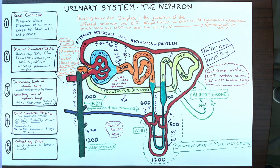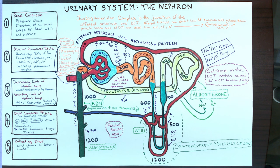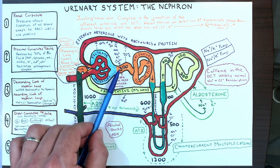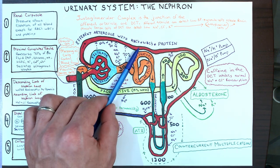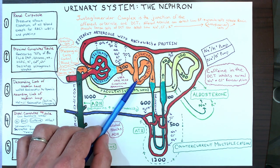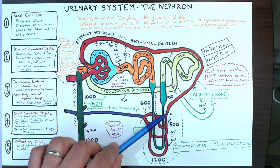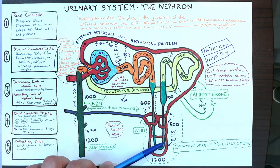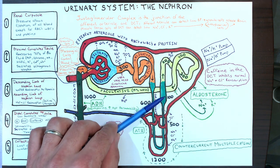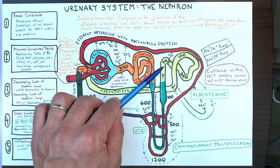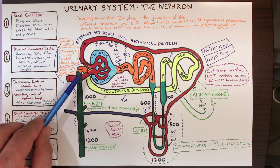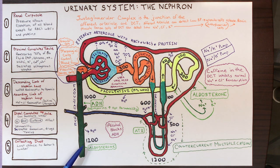Let me walk you through the five regions of the nephron. First, we have the renal corpuscle. Then we have the proximal convoluted tubule, or the PCT. We have the nephron loop, which you can subdivide into the descending limb and the ascending limb. Fourth, we have the DCT, the distal convoluted tubule. And finally, we have the collecting duct.